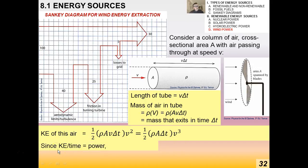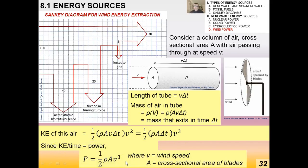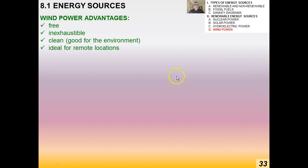Substituting the expression for mass into ½mv², we get a factor of v³. Since kinetic energy over time is power, we arrive at the equation in the IB data booklet: P = ½ρAv³, where v is the wind speed and A is the cross-sectional area swept by the blades. Note that the blade length given is the radius — be careful if given the diameter instead.